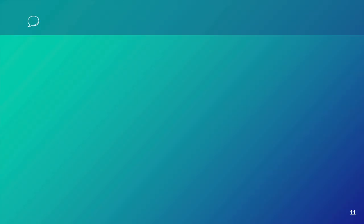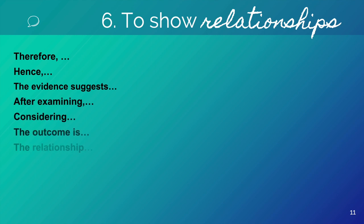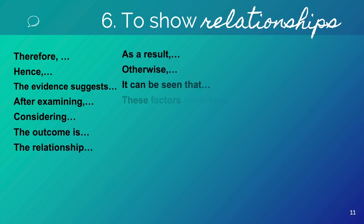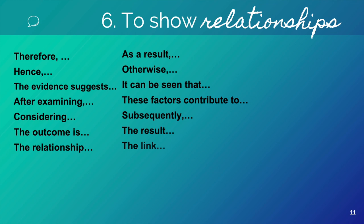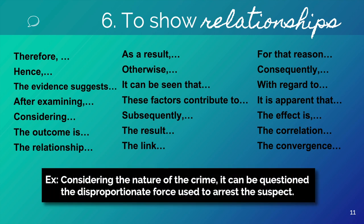Now let's take a look at the next group: to show relationships. We can use: therefore, hence, the evidence suggests, after examining, considering, and so on. We have many expressions to show relationship. My example for this group is: 'Considering the nature of the crime, it can be questioned that disproportionate force was used to arrest the suspect.'